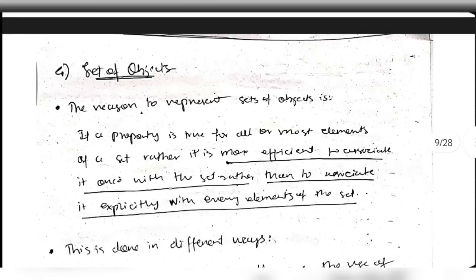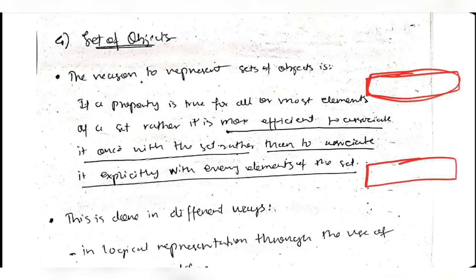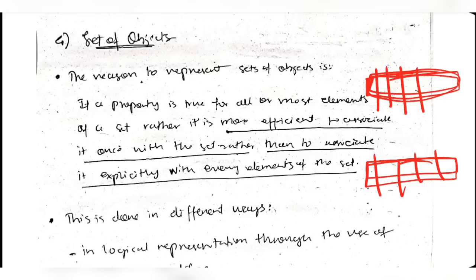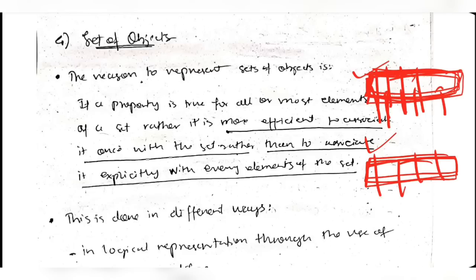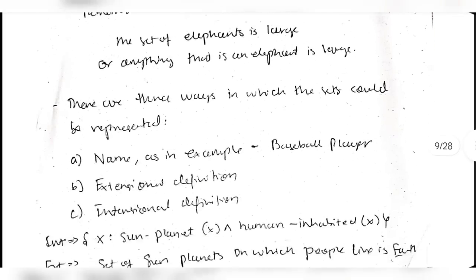The fourth issue is set of objects. Suppose you have all cars and all clothes - these each belong to a set. Instead of individually representing 'I have a blue car, I have a red car,' you represent them collectively as 'cars.' The concept is: instead of individually representing things, you represent the whole entity as one. For that we use the universal quantifier.